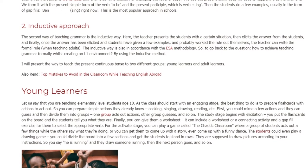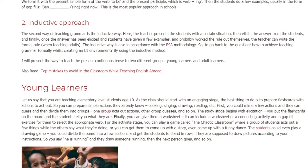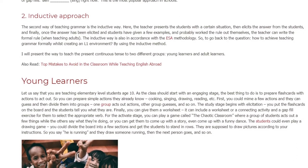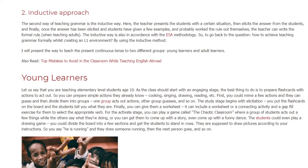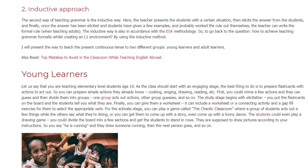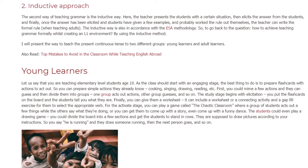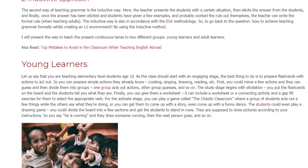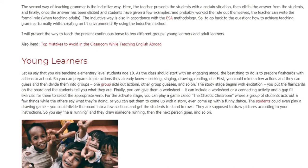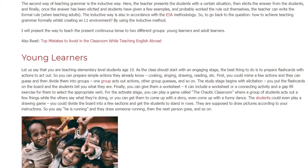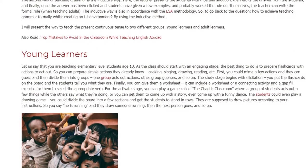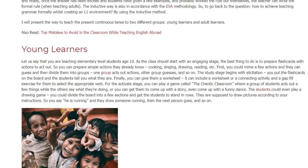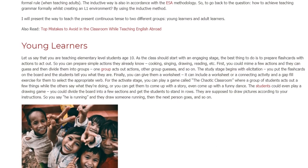Let's say that you are teaching elementary level students aged 10. As the class should start with an engaging stage, the best thing to do is to prepare flashcards with actions to act out — simple actions they already know: cooking, singing, drawing, reading, etc. First, you could mime a few actions and they can guess, then divide them into groups. One group acts out actions, the other group guesses.